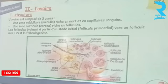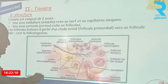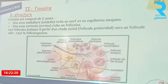Il va y avoir une évolution à partir d'un stade initial appelé follicule primordial vers un stade final appelé follicule de De Graaf — c'est la folliculogenèse. Les follicules évoluent du stade follicule primordial vers le follicule mûr ou follicule de De Graaf. On va détailler cette évolution et les structures en détail.